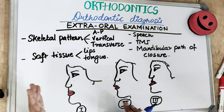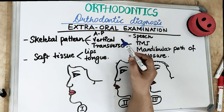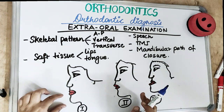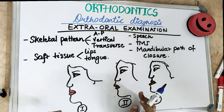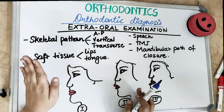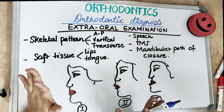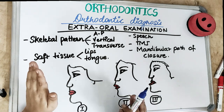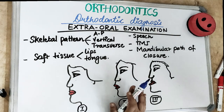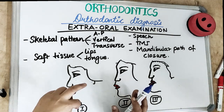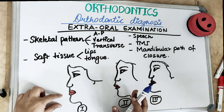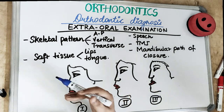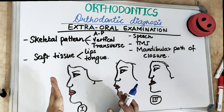For the vertical plane assessment, there are two approaches: assessing the lower facial height and assessing the Frankfurt mandibular plane angle. Make sure you know cephalometrics before starting case history — I'll give you a link in the description. We assess the lower facial height to determine whether it is normal, reduced, or increased, and we assess the Frankfurt mandibular plane angle.